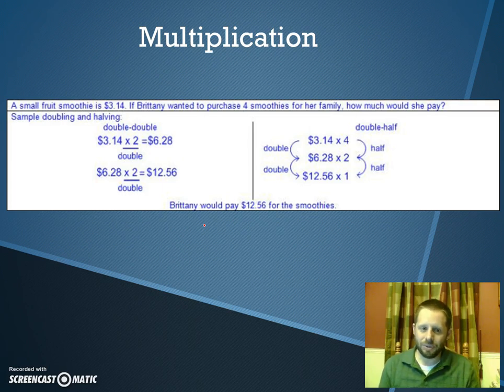I can double 3.14 pretty easy, just 3.14 plus 3.14. I get $6.28. That's the cost of two smoothies, but she really wants to buy four of them. So why not just double that number? We double the $6.28 and we get $12.56, which should be the cost for four smoothies. That's just using doubling to get there.